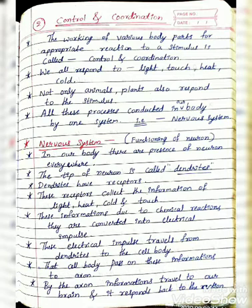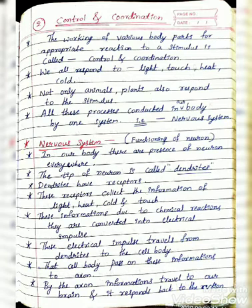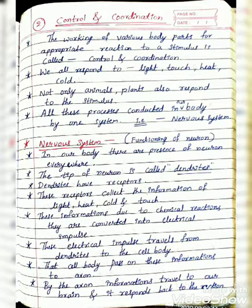The dendrites of a neuron collect information and convert it into electrical impulses through chemical reactions taking place in the cell. These electrical impulses travel from the dendrite to the cell body. The cell body then passes on the information to the axon. By the axon, information travels to our brain and it responds back to the reaction.